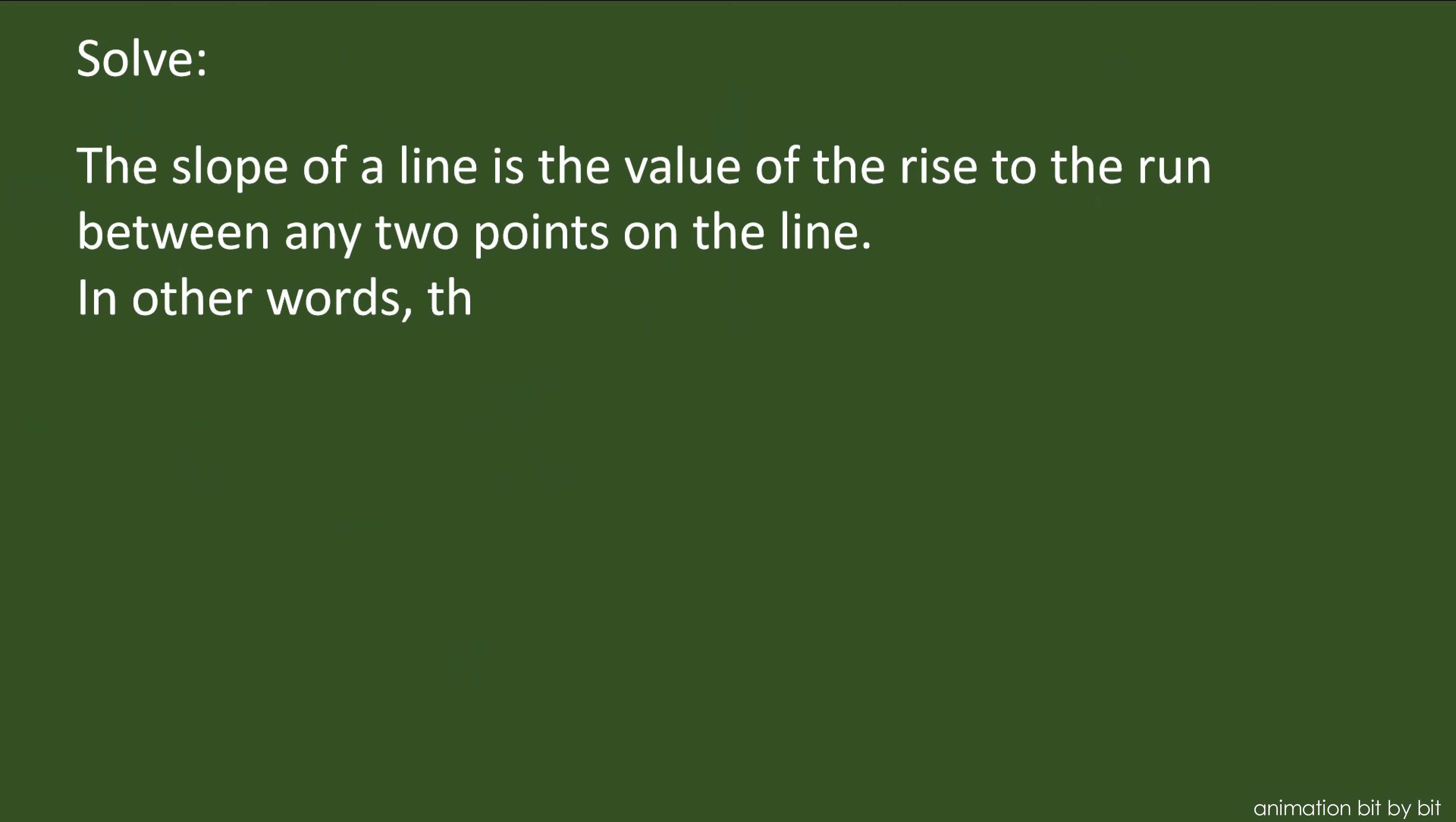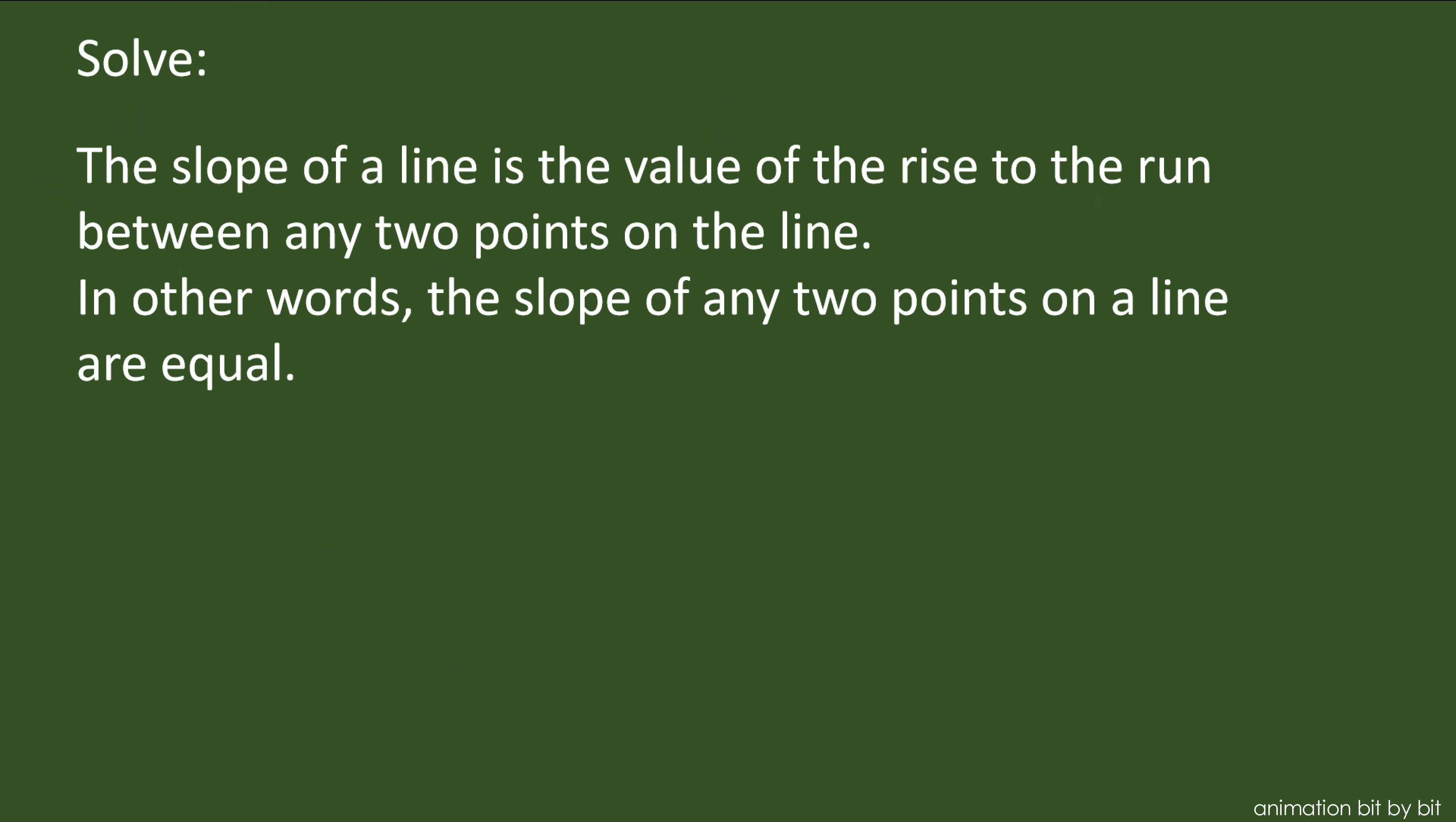Now to solve this question, we need to find the slope of the line. The slope of a line is the value of the rise to the run between any two points on the line. In other words, the slope of any two points on a line are equal.